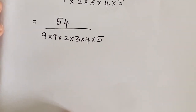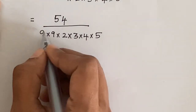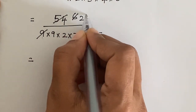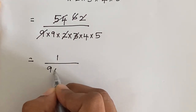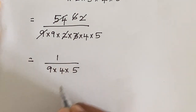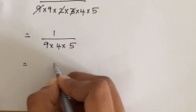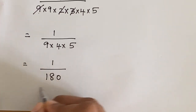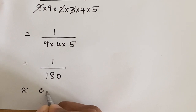Now let's cancel out. 54 divided by 9 cancels — 54 equals 9 times 6, so the 9 cancels leaving 6. Then 6 equals 2 times 3, so 2 and 3 cancel out. We get 1 divided by 9 times 4 times 5, which equals 1 divided by 180. So 1 divided by 180 is approximately 0.005.